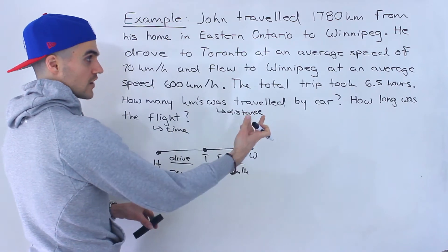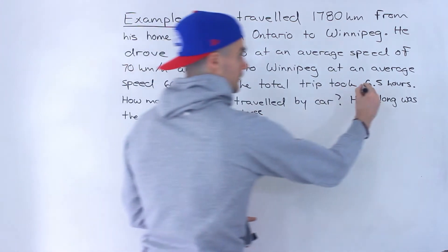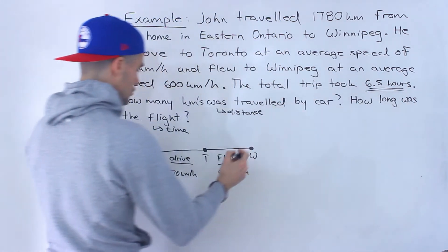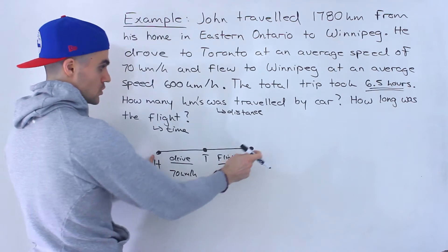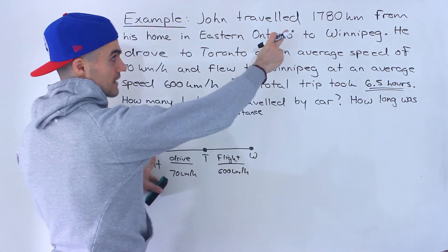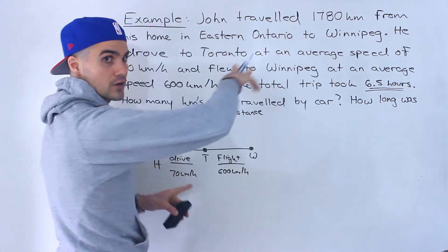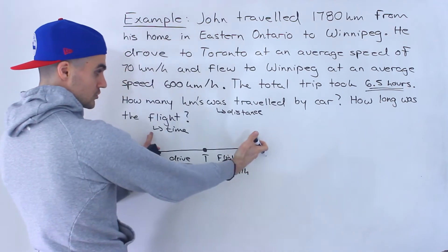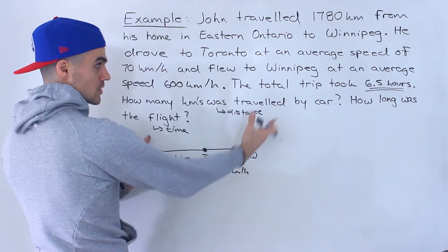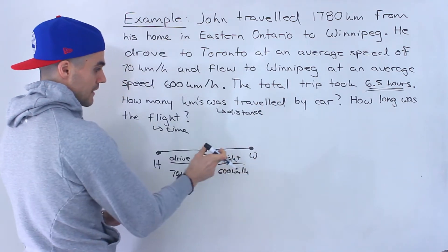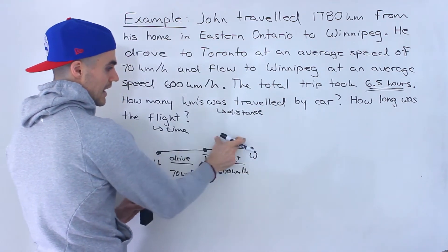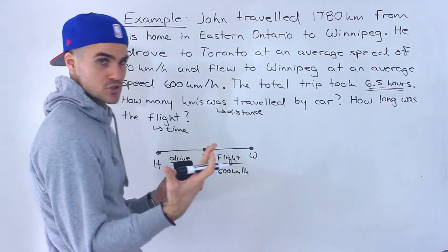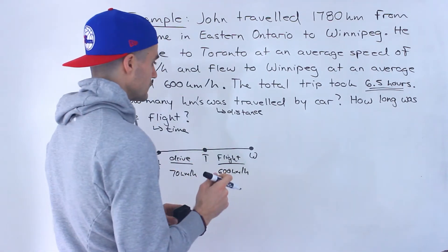We're not given the time or distance for each individual part. We're given the total time, which is six and a half hours, and the total distance from his home to Winnipeg, which is 1,780 kilometers. We don't know the time and distance for each portion — that's what we're going to have to figure out.